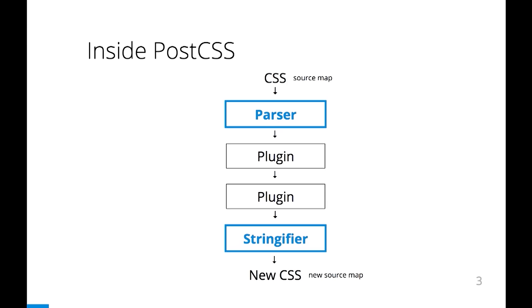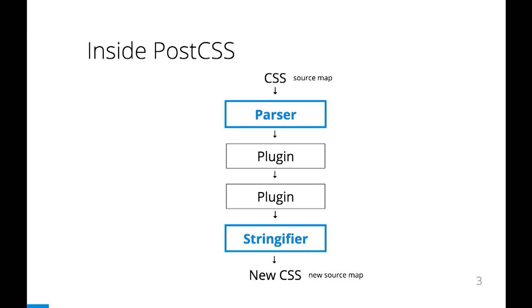PostCSS core is very small. It contains only a parser and a CSS stringifier. The parser generates an abstract syntax tree — a tree of objects from the CSS string — and the stringifier does the opposite: it generates a CSS string from the abstract syntax tree. So by default, PostCSS is very useful — it does nothing. All magic happens inside the plugins.